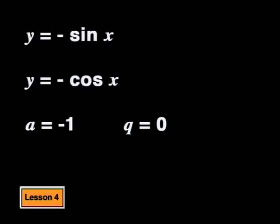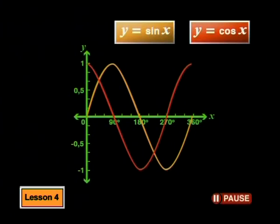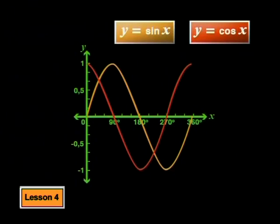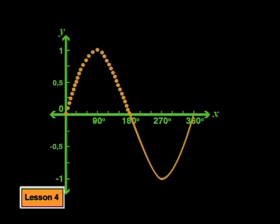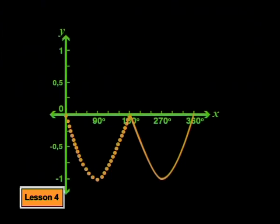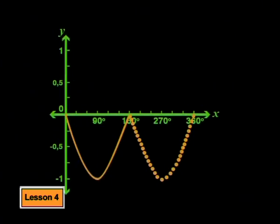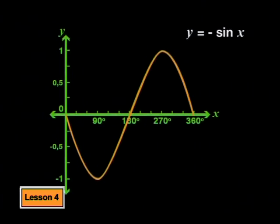Let's make a equal to negative 1 and see what happens to the parent graphs. The formulas become y equals negative·sine(x) and y equals negative·cosine(x). Since a is negative 1, all y values should change by a factor of negative 1 — each y value keeps the same number but with the opposite sign. All y values above the x-axis are positive, so multiplying by negative 1 makes them negative. All y values below the x-axis are negative, so multiplying by negative 1 makes them positive. The new graph looks like this.